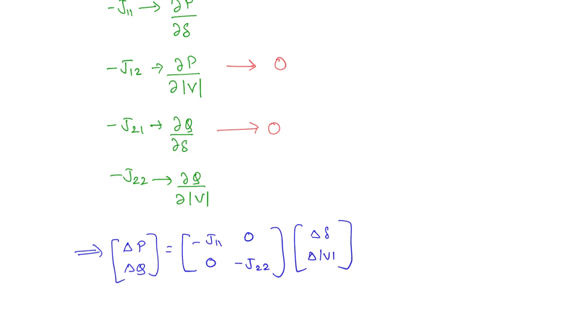Now you can see here when you write these equations, delta P is equal to this row into this column, minus J11 delta delta. So you can write delta P is equal to minus J11 delta delta. It is not dependent on delta V and delta Q is equal to minus J22 delta V. Such a matrix equation is called the decoupled equations.